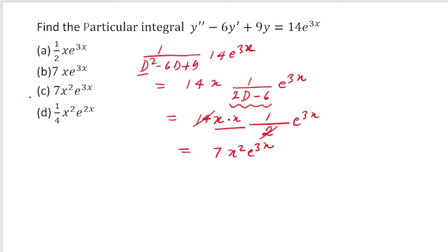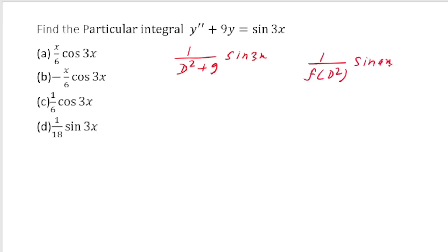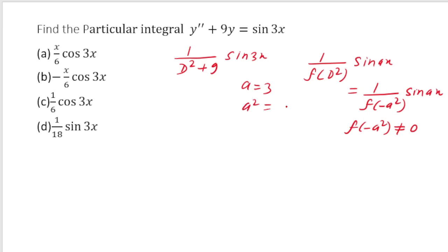Fourth: find the particular integral of 1/(D²+9) operating on sin(3x). The formula is 1/f(D²) · sin(ax) = 1/f(-a²) · sin(ax), provided f(-a²) ≠ 0. Here a = 3, a² = 9, so -a² = -9. Substituting: -9+9 = 0. This is again a failure case.